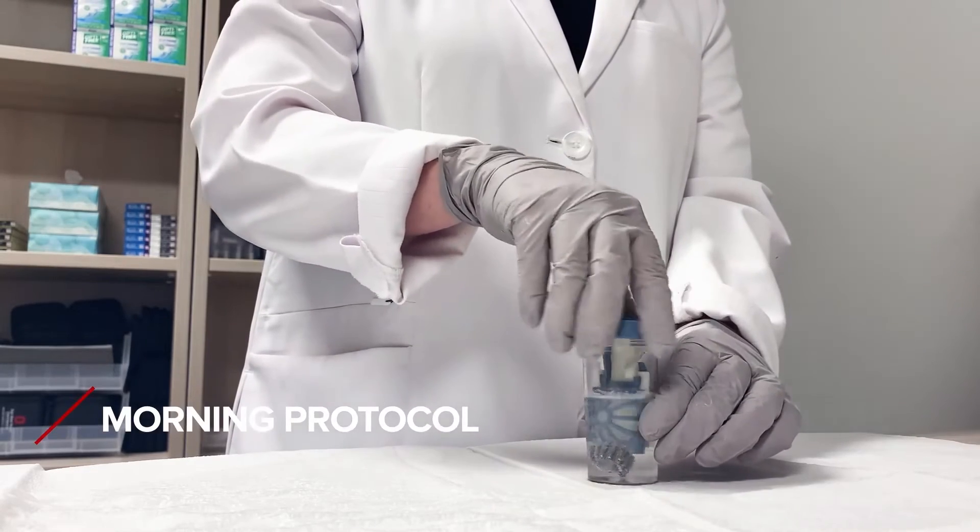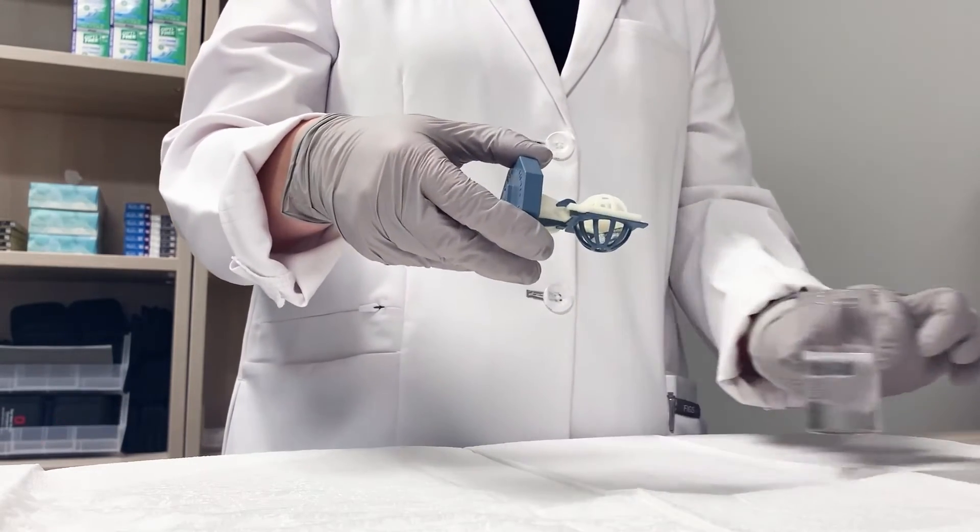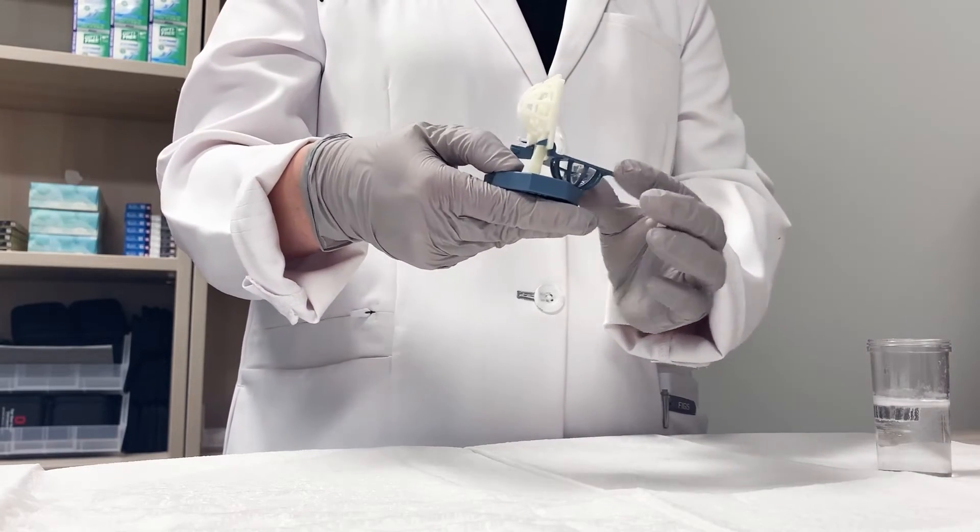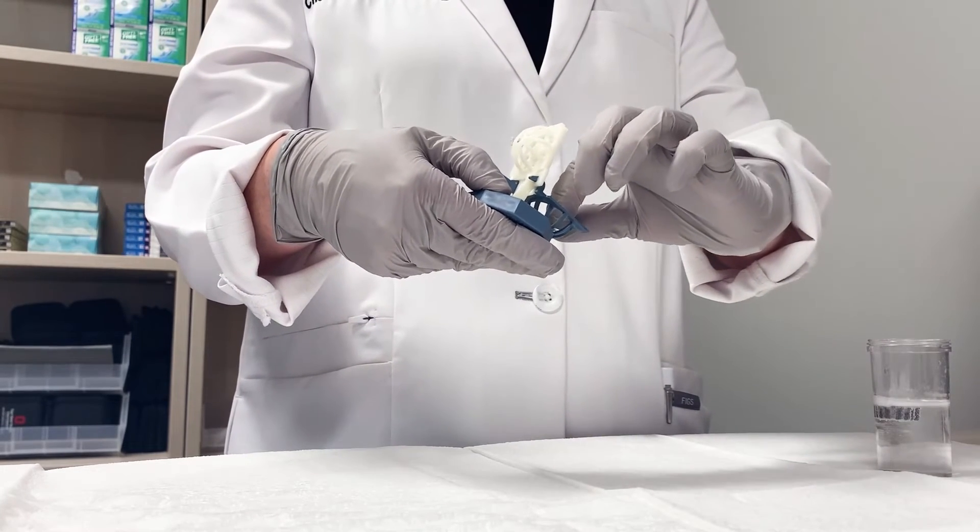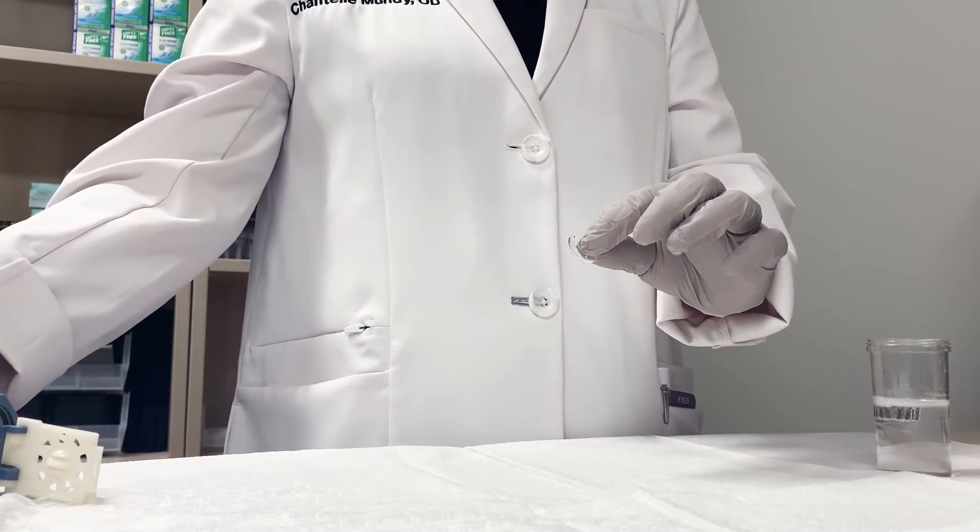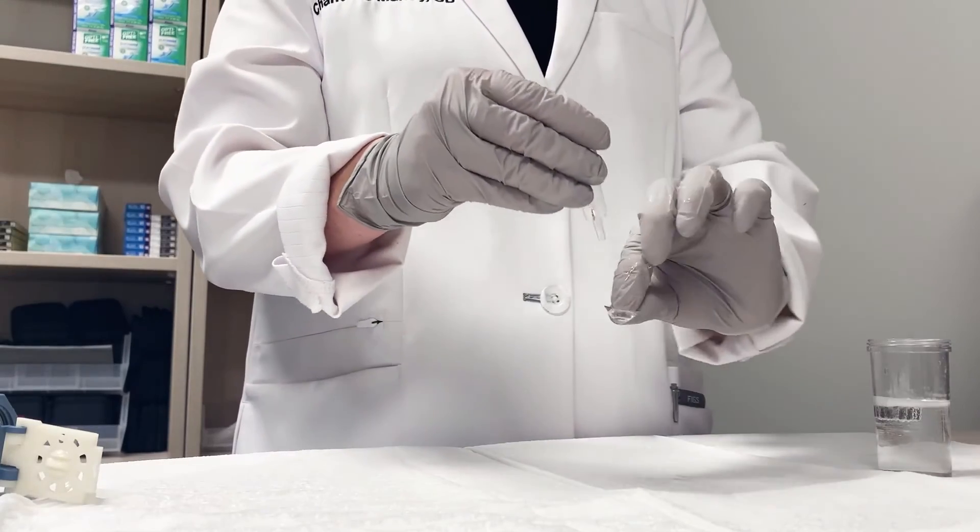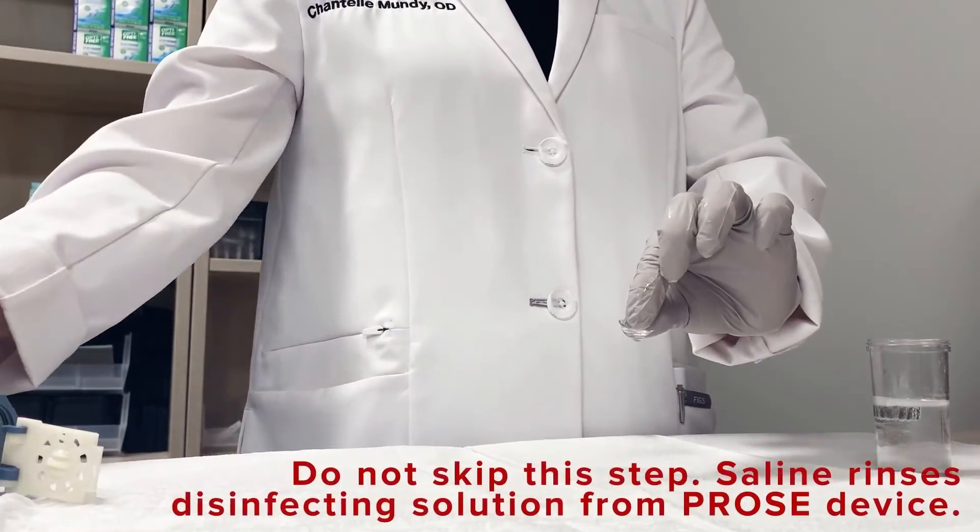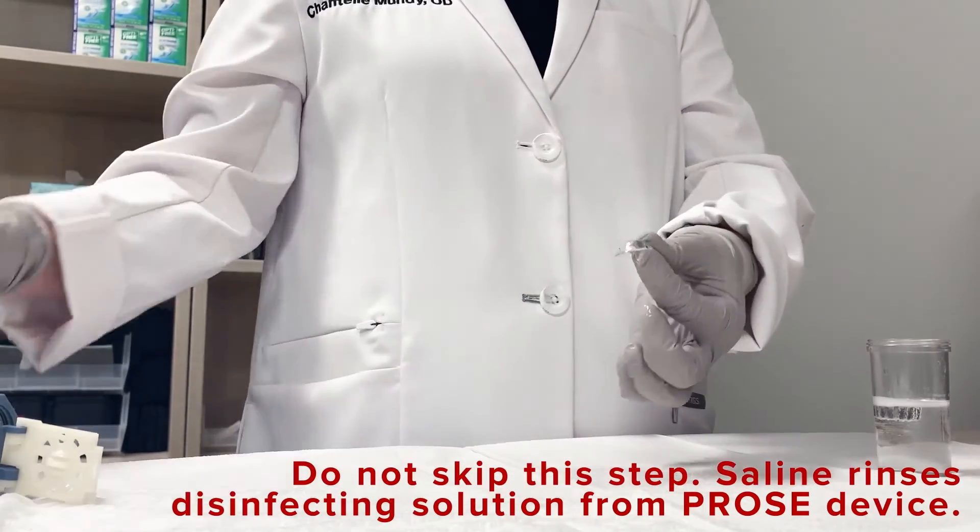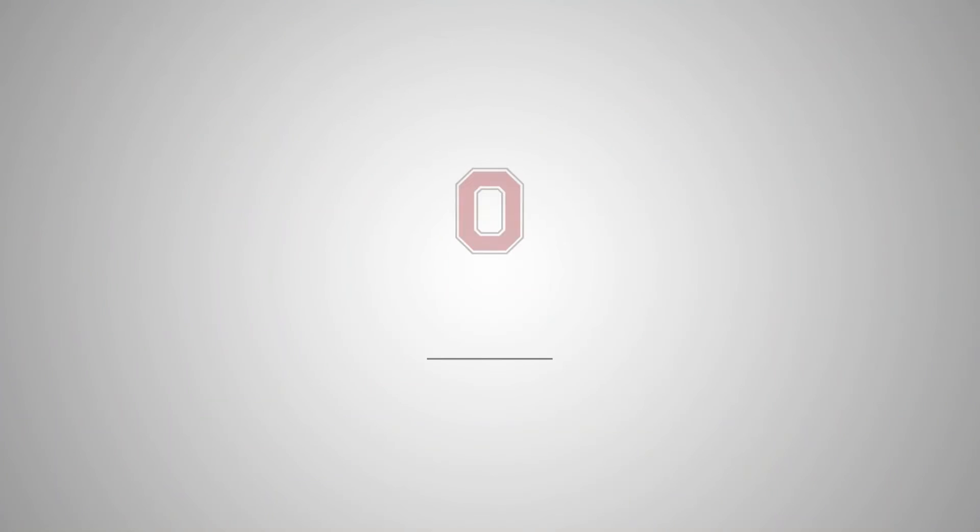To remove, open the basket gently and handle the device by the edge. You are then going to use the non-preserved saline solution prescribed by your doctor to rinse the lens. Your device is then ready to be applied to the eye.